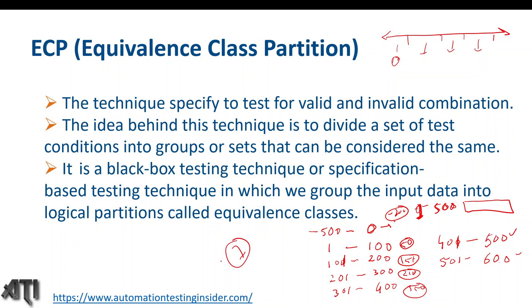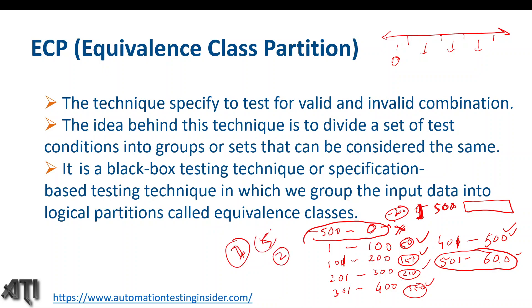Out of these 7 test cases, the minus 500 to 0 partition is invalid because the range is 1 to 500. The partitions 1–100, 101–200, 201–300, 301–400, and 401–500 are positive test cases, and 501–600 is again a negative scenario. So out of 7, 5 are positive and 2 are negative. This is how you derive test cases based on equivalence class partitioning.